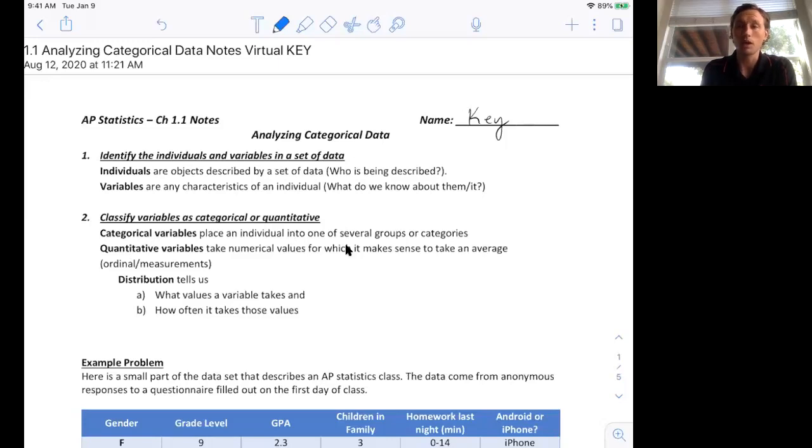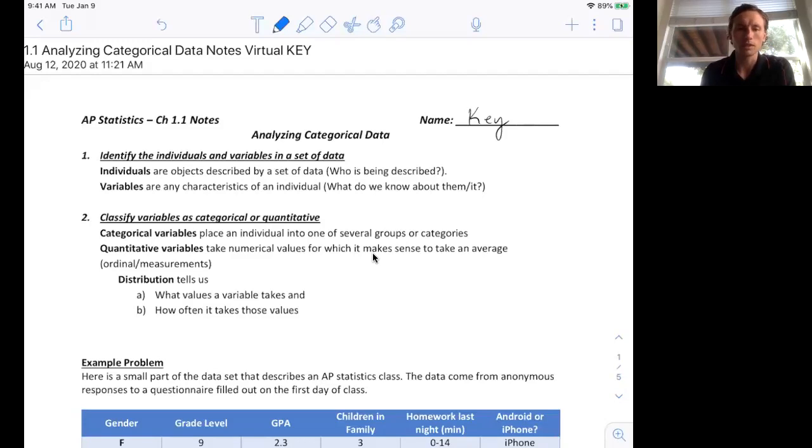For example, the height of somebody would be quantitative because it's measuring their height. Quantitative variables will always have units: inches, centimeters, pounds. Let's look at an example problem to really clarify all this.